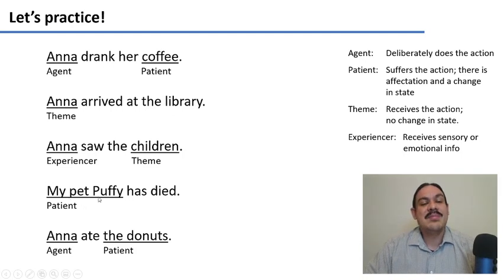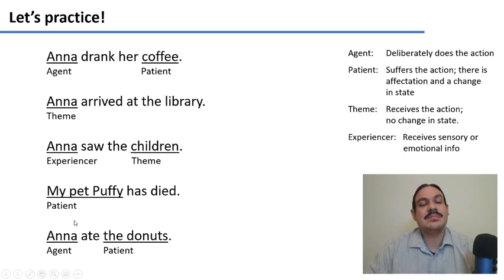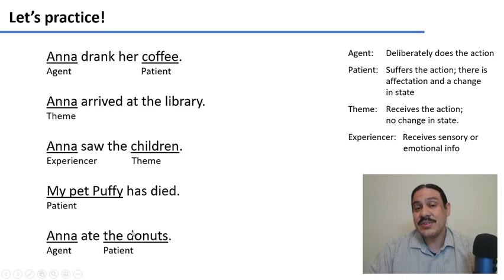Notice this is very different from a patient like the coffee, which does change after the action — after the coffee is drunk, there's no more coffee. In my pet Puffy has died, Puffy is a patient because the poor Puffy is receiving the action of having died and there's a definite change in state. In the sentence Anna ate the donuts, Anna is an agent who does the action, and the donuts are the patient — they suffered the action and now there are no more donuts.